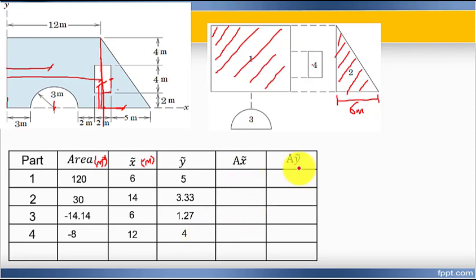Now, we multiply area times x-tilde. Area is available, x-tilde is available, so we multiply them. The same for y-tilde. The total area is 127.86 square meters.